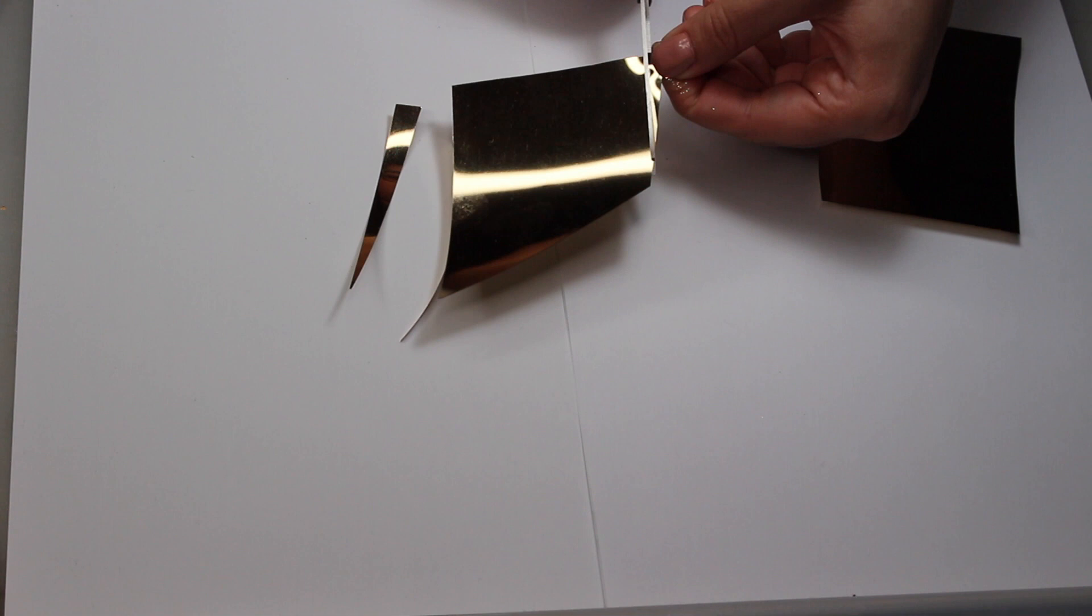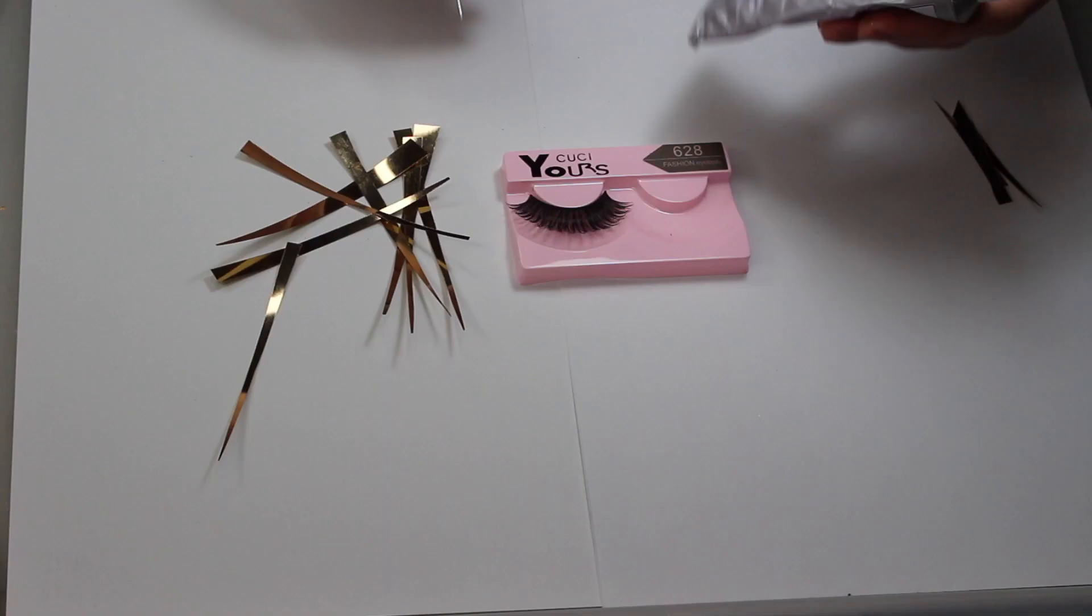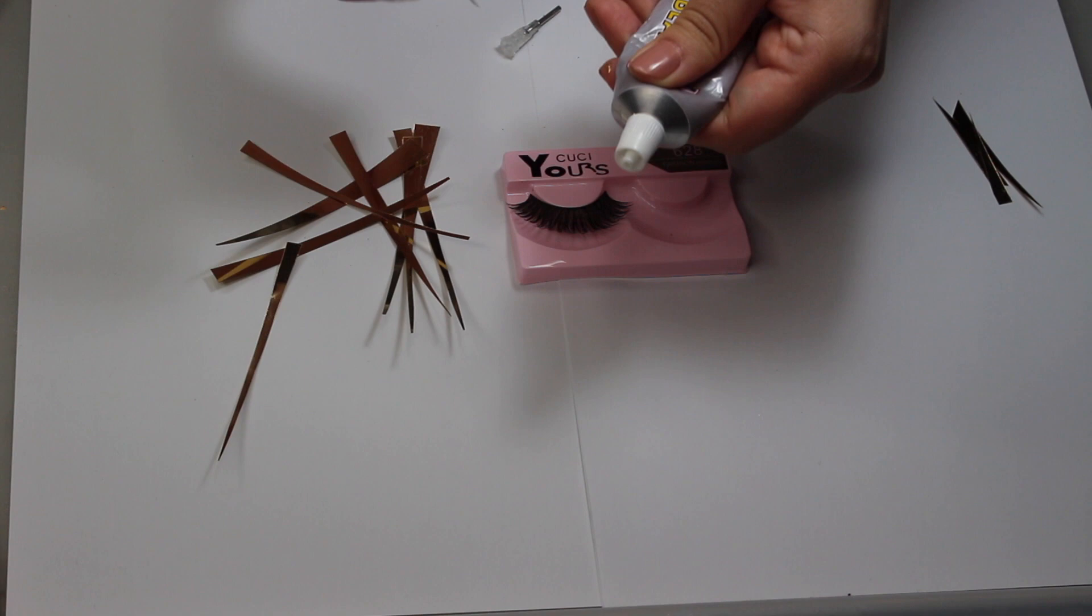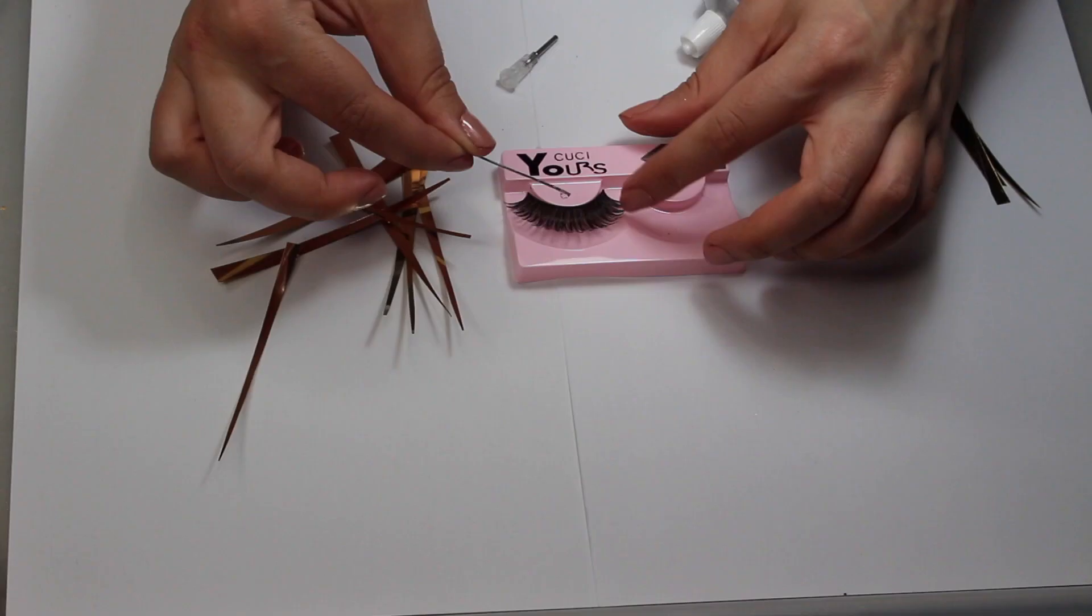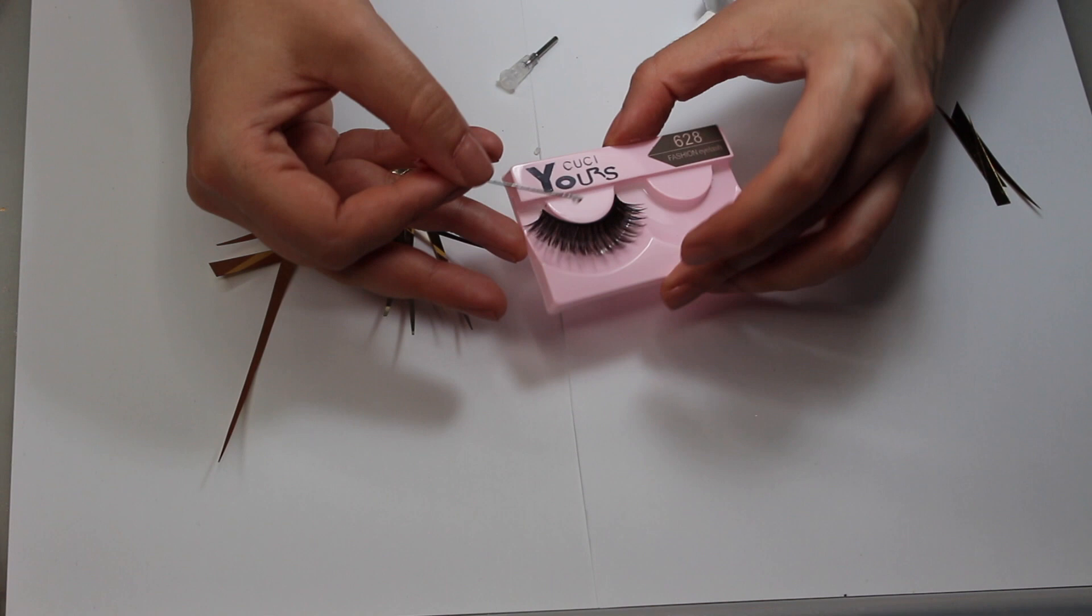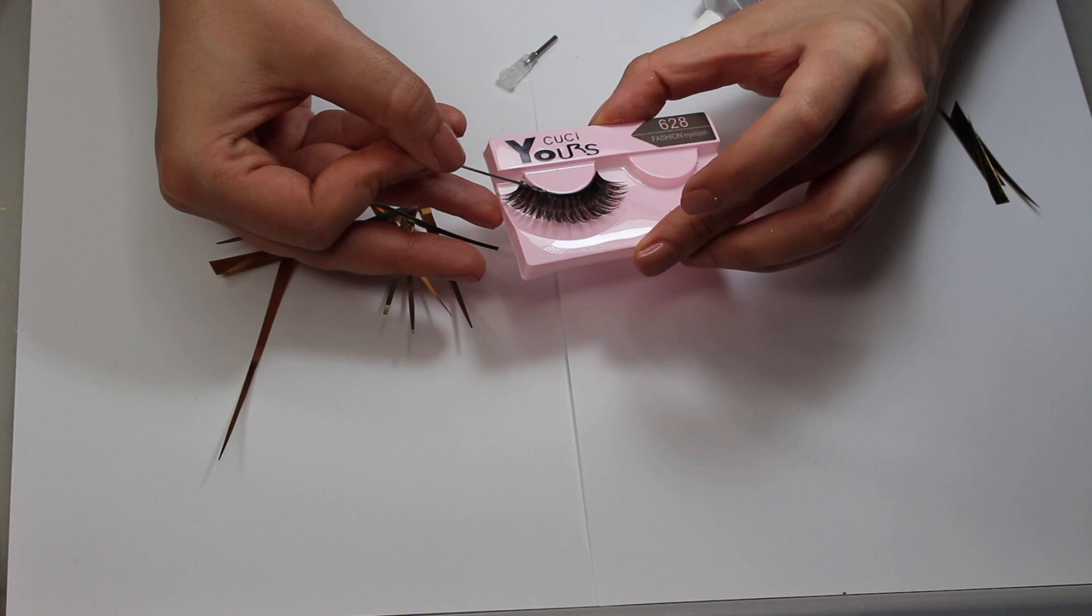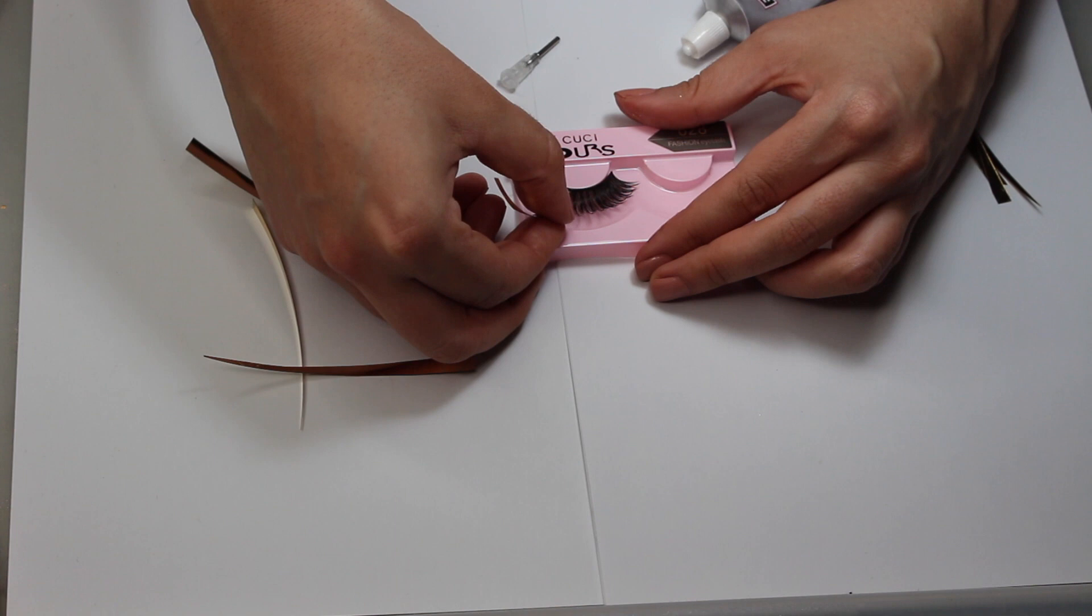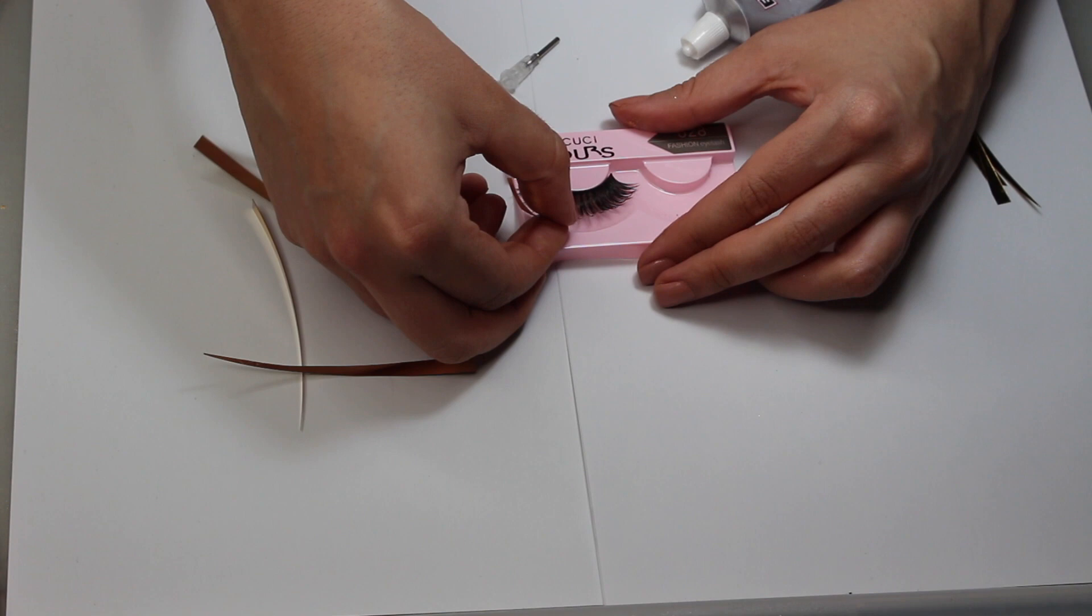For the top lashes I took this E6000 glue and I just took some of that onto a pin and placed it really carefully along the lash line. Then I took a lash and I held it into that glue. You have to wait until the glue is pretty dry before you let go, so it's a long process. I'm not going to lie, it's not hard but it's kind of long.